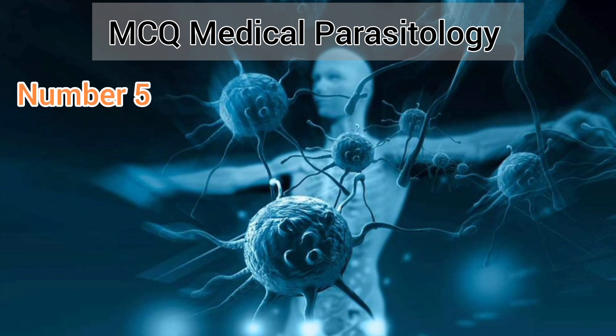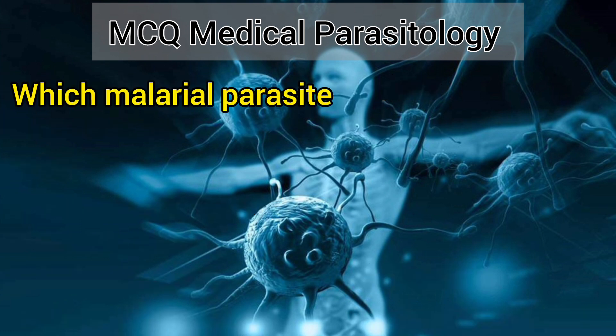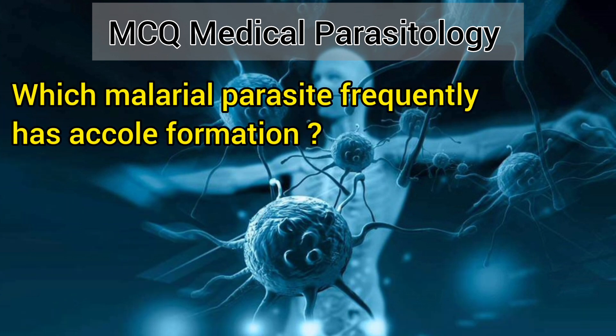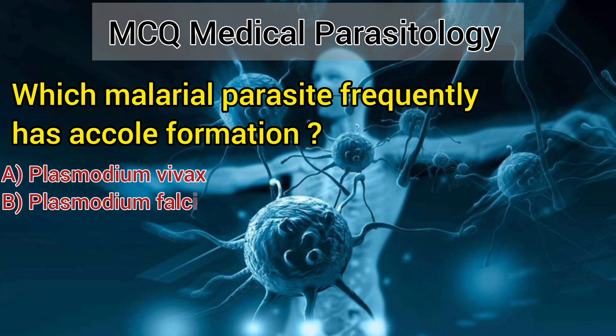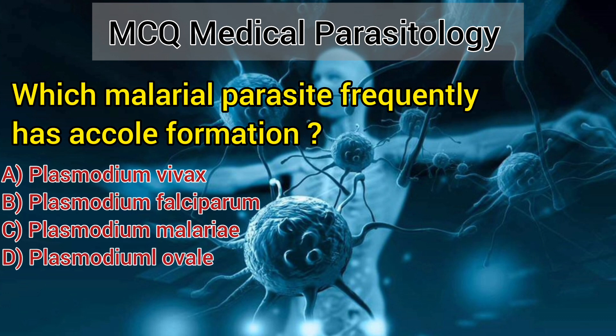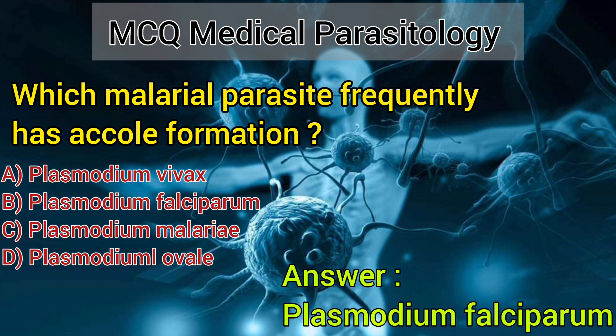Number 5. Which malarial parasite frequently has cold formation? A. Plasmodium vivax. B. Plasmodium falciparum. C. Plasmodium malariae. D. Plasmodium malariale. Answer: Plasmodium falciparum.